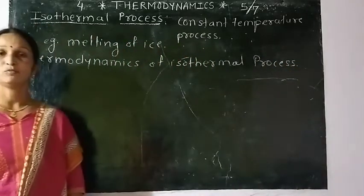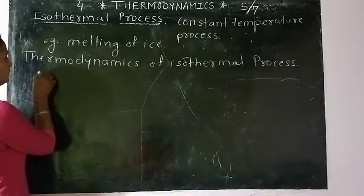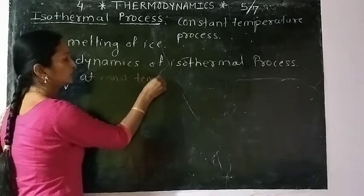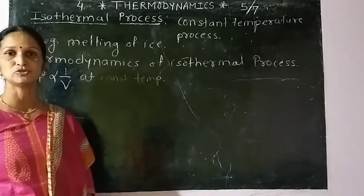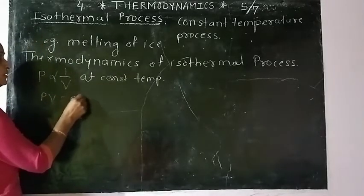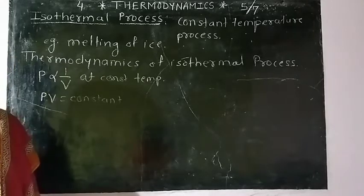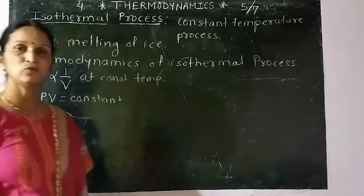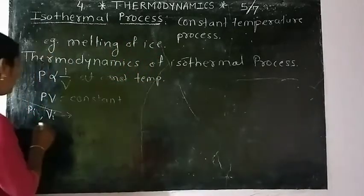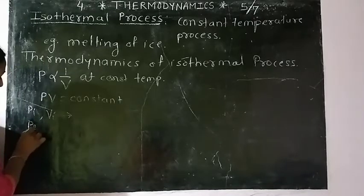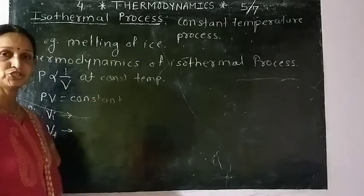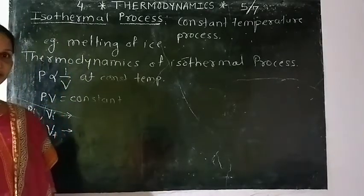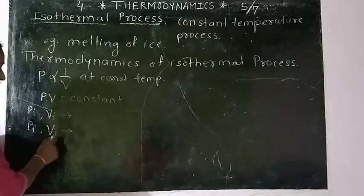We know the statement of Boyle's law: pressure is inversely proportional to volume at constant temperature. That means PV is equal to constant. Suppose P_I and V_I are the pressure and volume at the initial state, and P_F and V_F are the pressure and volume at the final state.